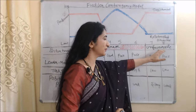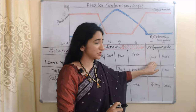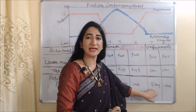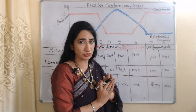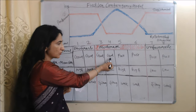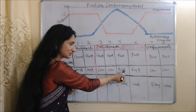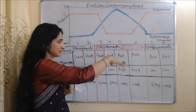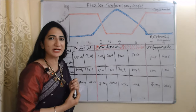In an unfavorable situation, nothing is in favor of the leader — leader-member relationships are poor, task structure is low, and positional power is mostly weak. So it is called an unfavorable situation. In a moderate situation, the conditions are mixed: sometimes leader-member relationships are good, sometimes poor; task structure can be high or low; and positional power alternates between strong and weak. So we can say the situation is neither too good nor too bad — it is called a moderate situation.